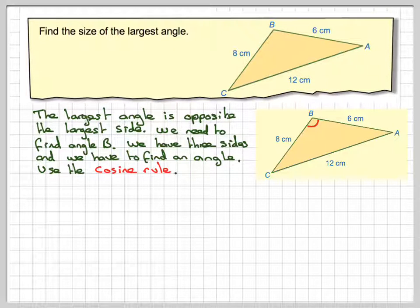Okay, so use the cosine rule. Now, the cosine rule for an angle is written like this. First, you label the sides. So this is going to be A, this is going to be B, and this is going to be C.